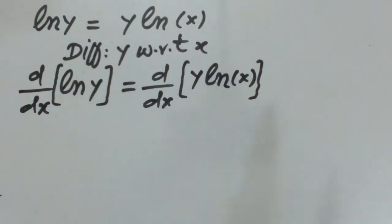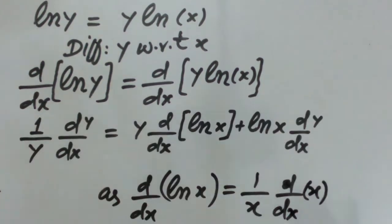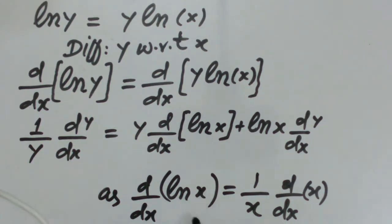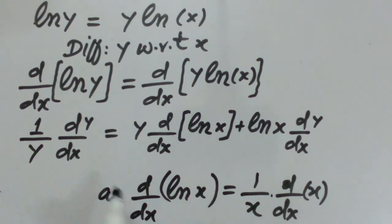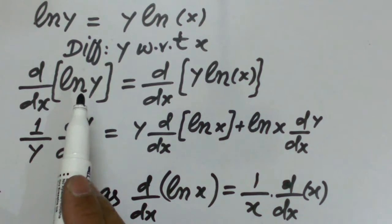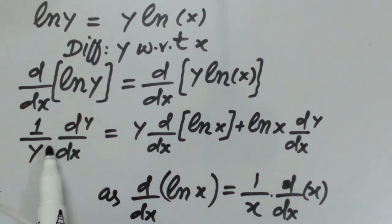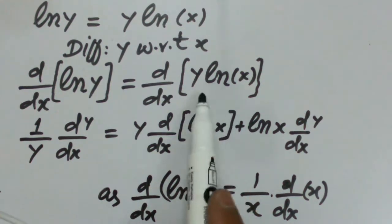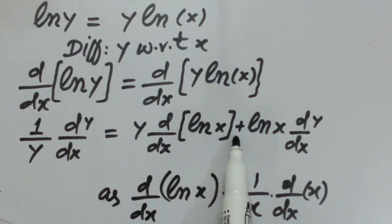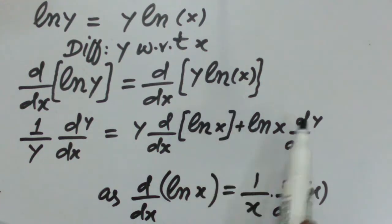We apply the derivative operator d/dx on both sides of this function. The right-hand side is a product of two functions, so we apply the product rule. For the left side, we apply the derivative of ln(x), which is 1/x multiplied by the derivative of x. Applying the same formula for ln(y), the derivative is (1/y) · (dy/dx).